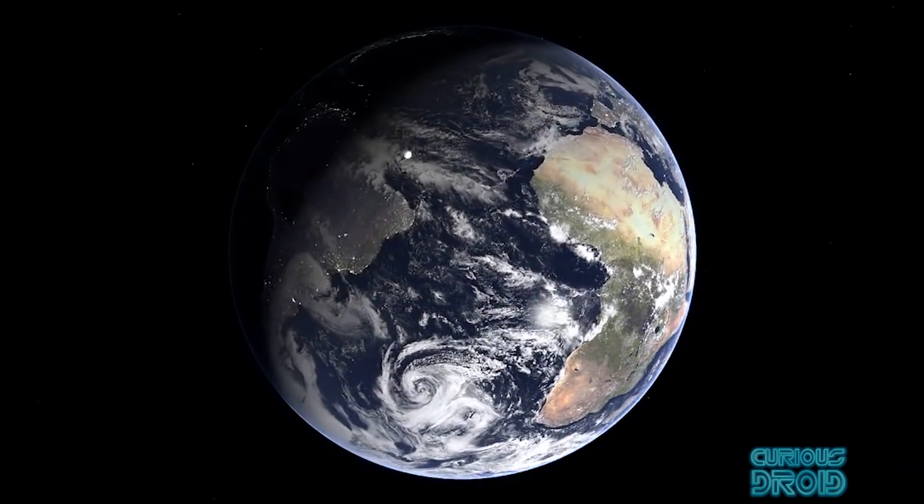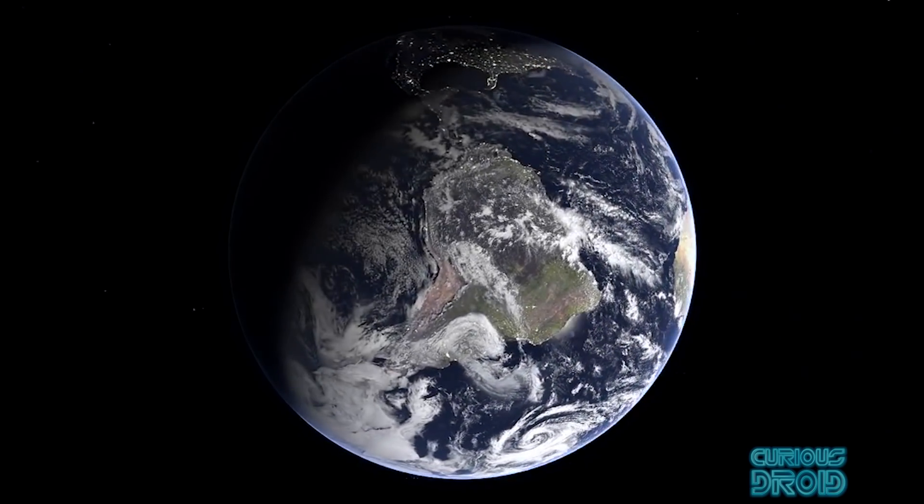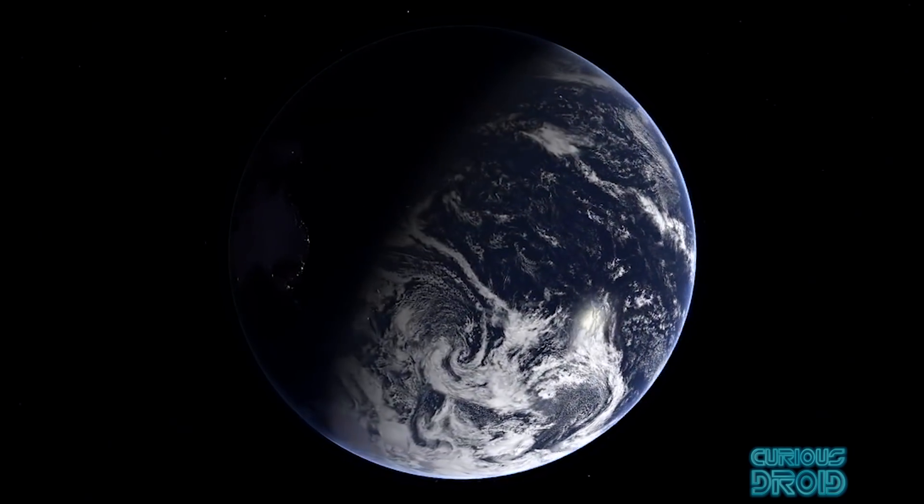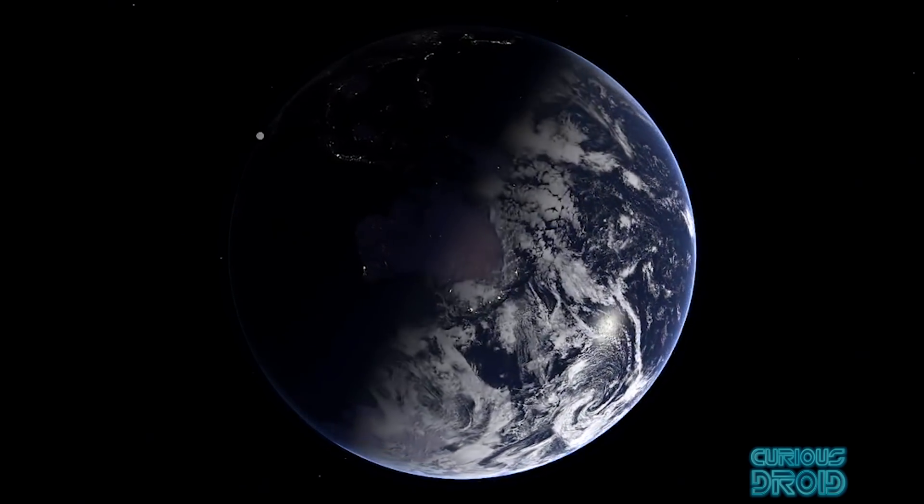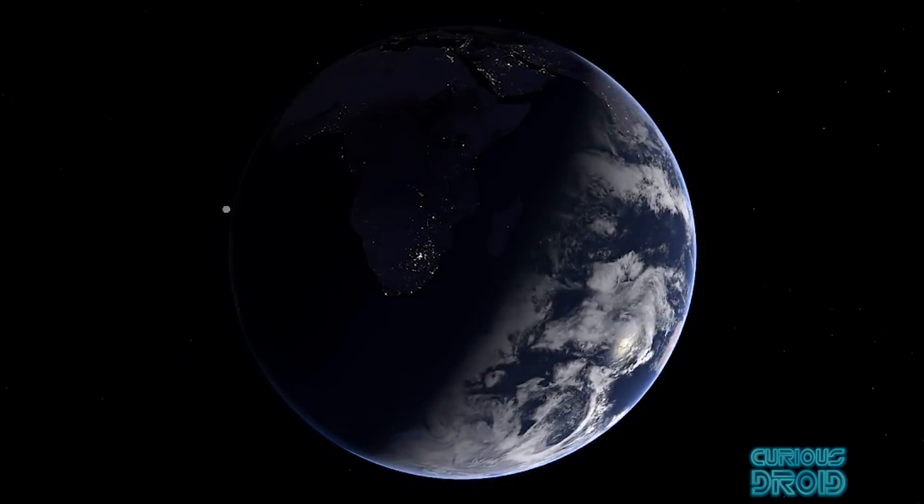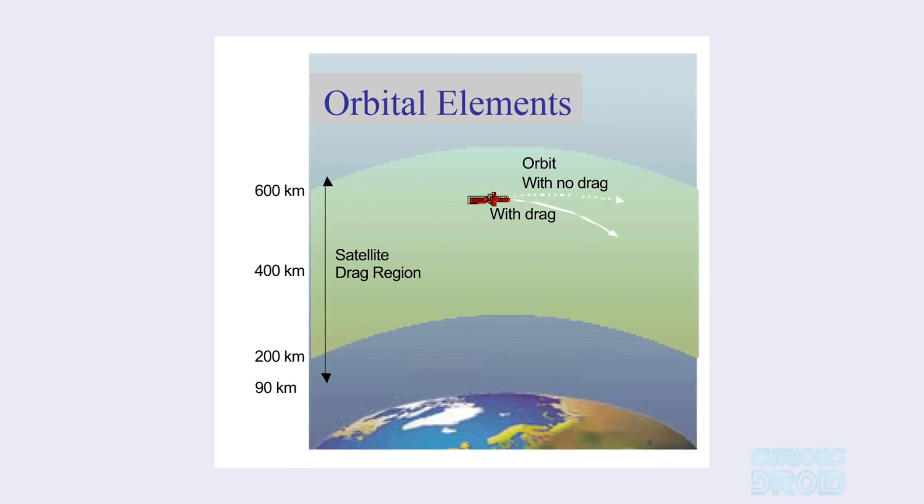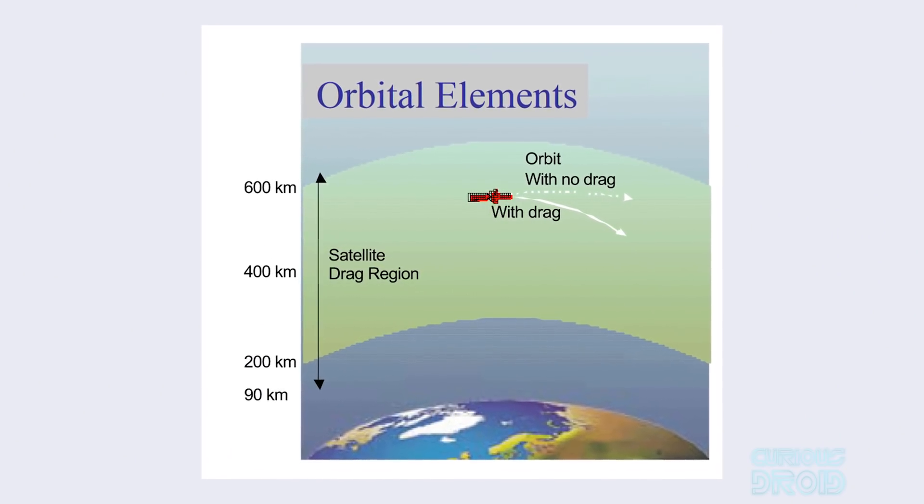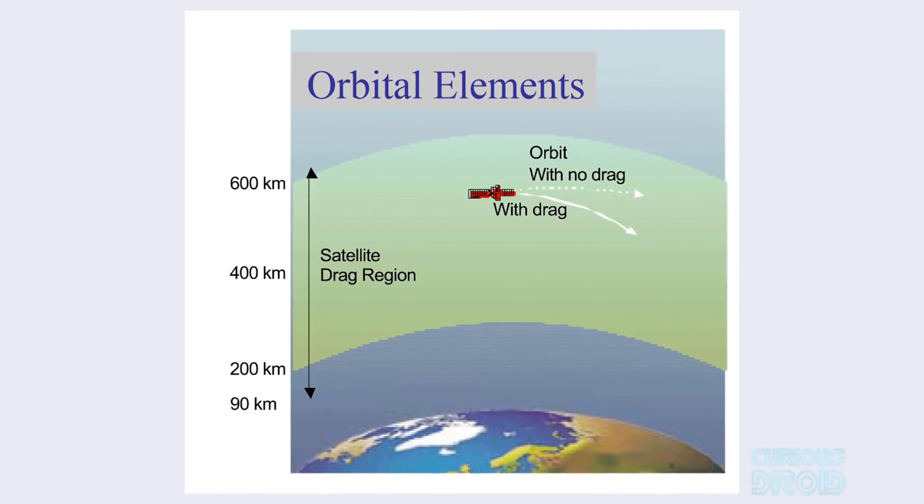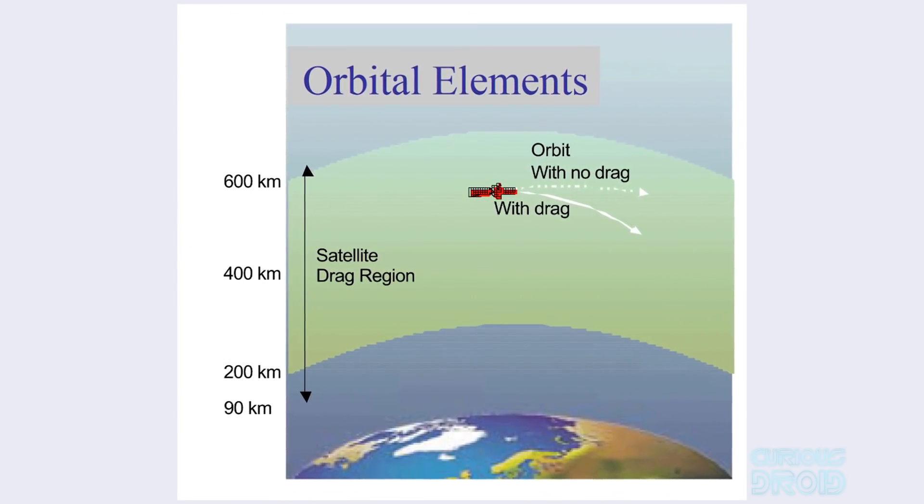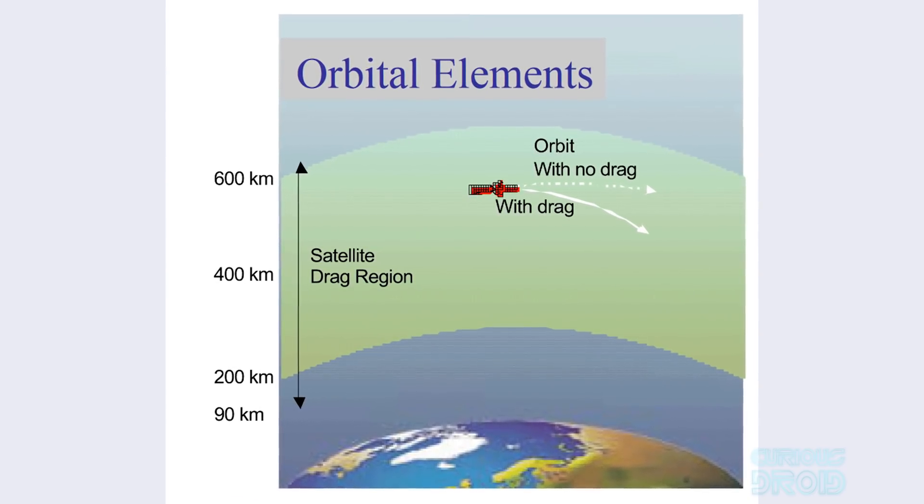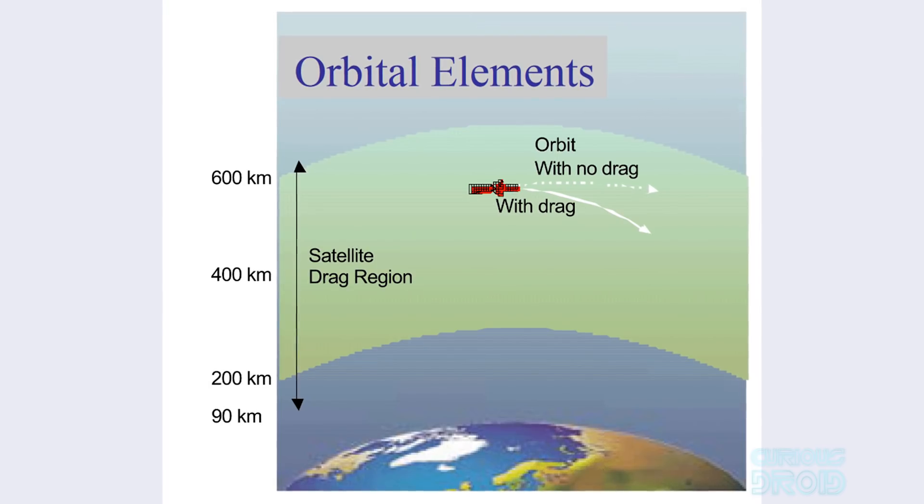This is done because although the Hubble is in orbit in space, the height of this orbit is still low enough to be in the very thin upper atmosphere, and this creates drag which slows it down over time. This slowing down causes the orbit to decay and become lower, which increases the drag, which slows it down more, and so on. If nothing is done, it will eventually crash back to Earth and burn up.